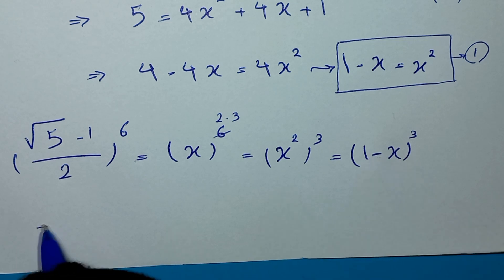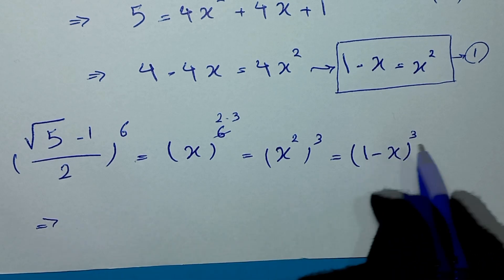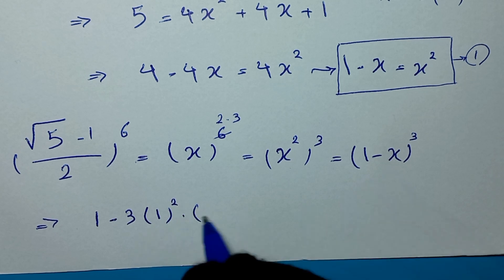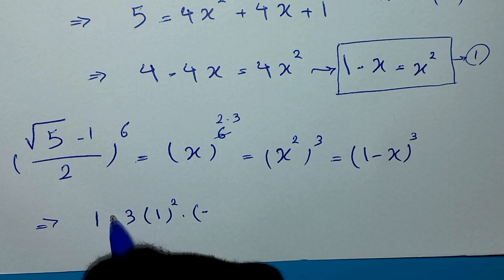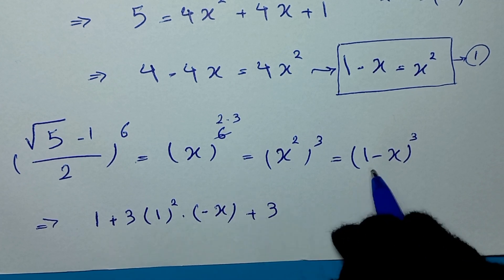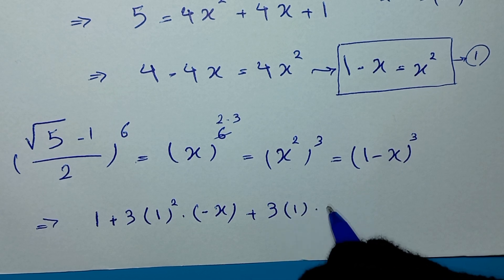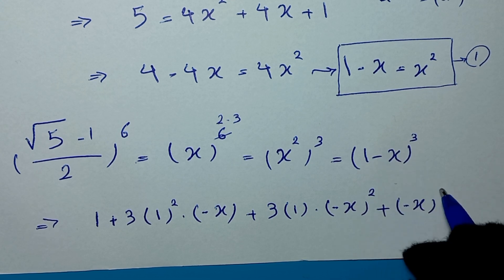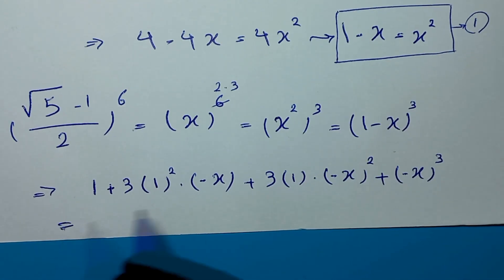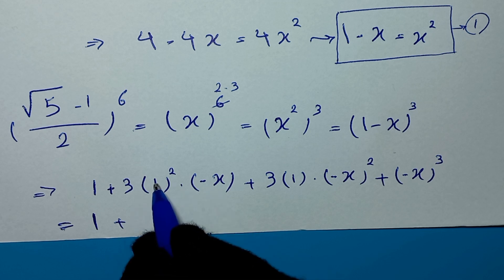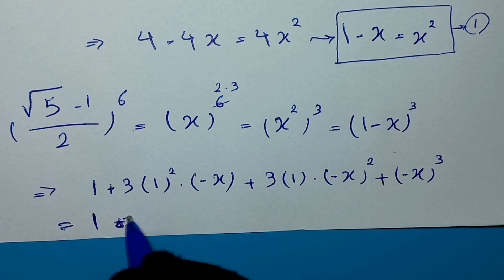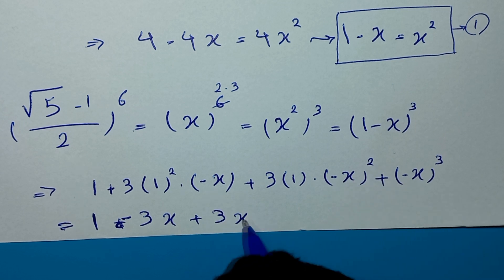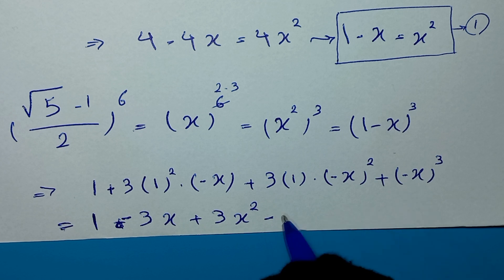Now we expand (1 minus x)³ using the binomial theorem: 1³ minus 3 times 1² times x plus 3 times 1 times x² minus x³. This equals 1 minus 3x plus 3x² minus x³.